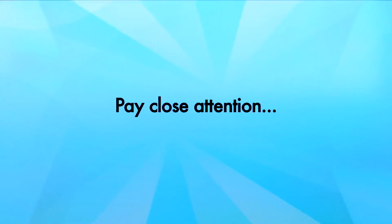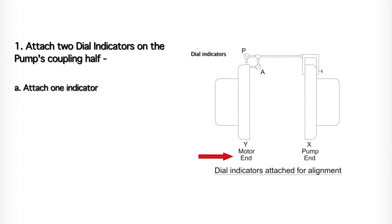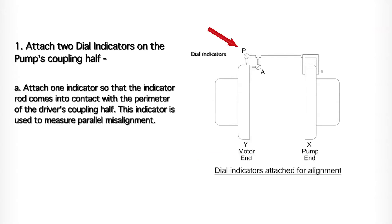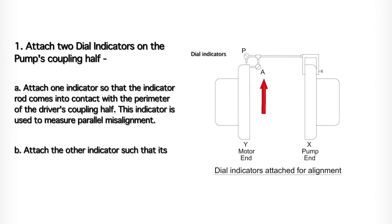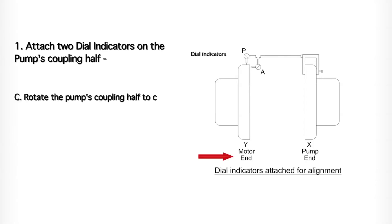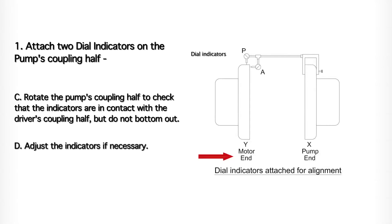Pay close attention. Step 1: attach two dial indicators on the pump's coupling half. A: attach one indicator so that the indicator rod comes into contact with the perimeter of the driver's coupling half — this indicator is used to measure parallel misalignment. B: attach the other indicator such that its rod comes in contact with the inner end of the driver's coupling half — this indicator is used to measure angular misalignment. C: rotate the pump's coupling half to check the indicators are in contact with the driver's coupling half, but do not bottom out. Adjust the indicators if necessary.